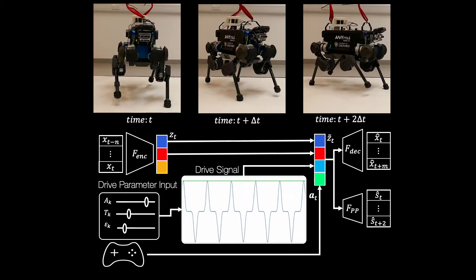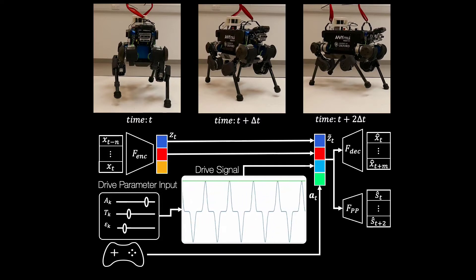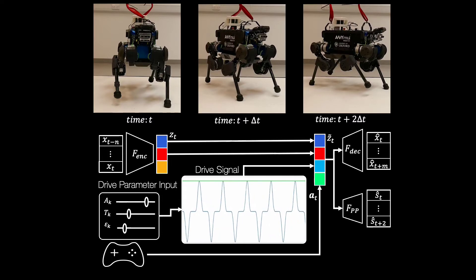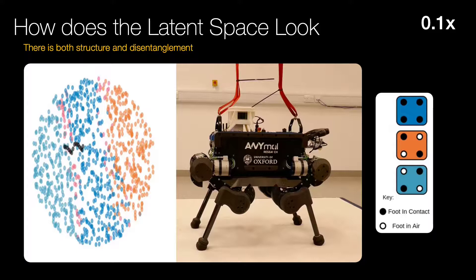The VAE is trained exclusively with synthetic data, and once trained we inject a drive signal which overwrites a single latent variable to provide control over the robot's gait.